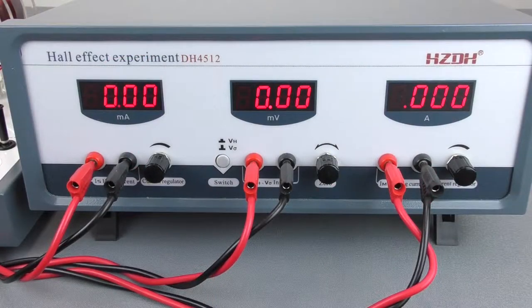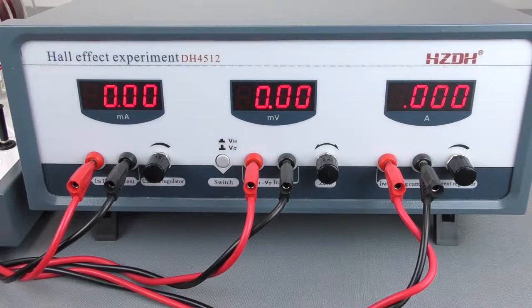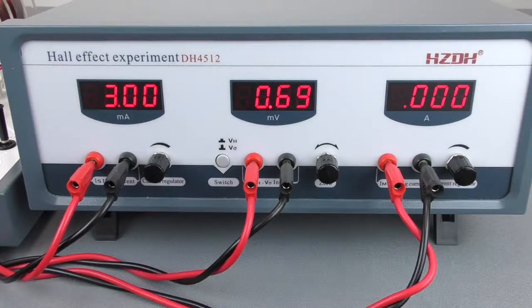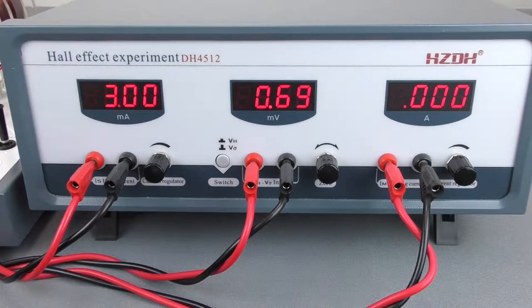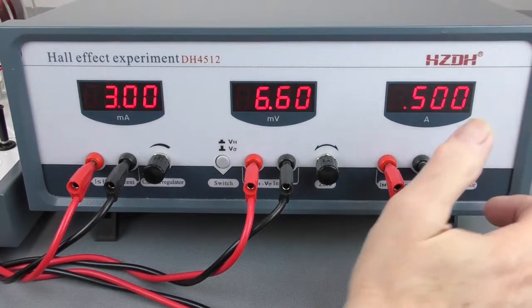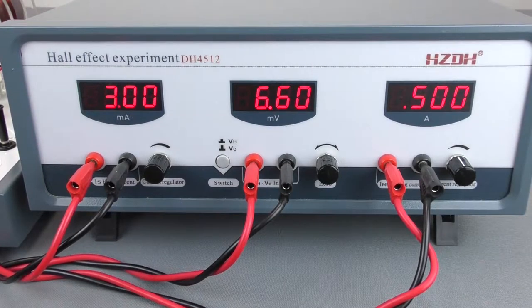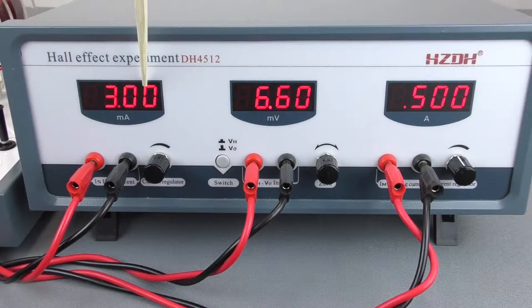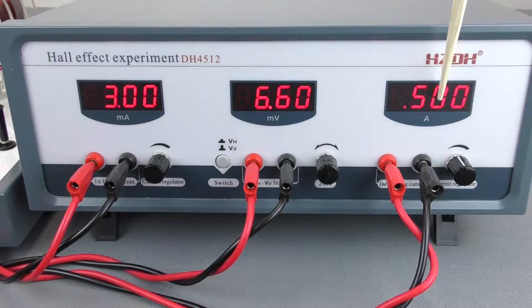So now we're going to set the drive current to three milliamps and the magnetic field coils to half an amp. The advantage of the 10-turn potentiometers is you can zero in to exactly three milliamps or exactly half an amp.